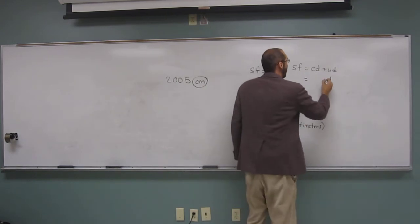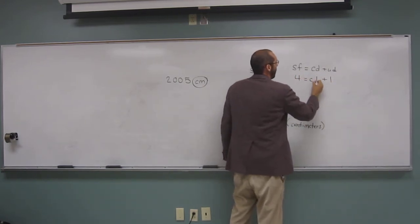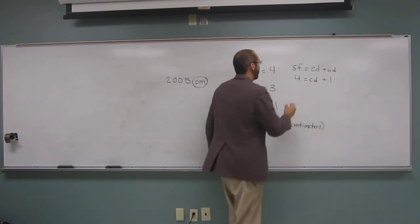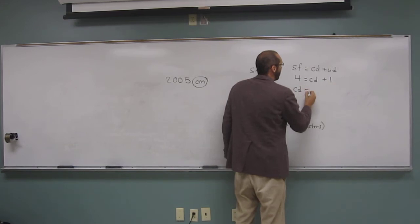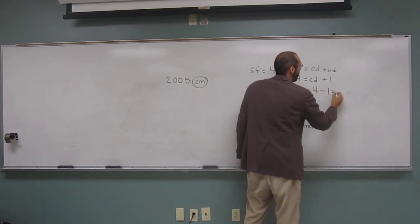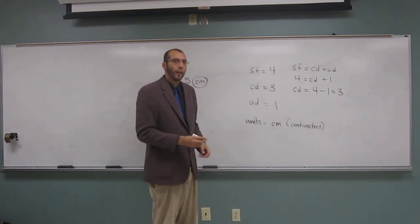One. And if we have four significant figures, right? So we could do something like this. Let's rearrange this equation. Certain digits must be four minus one, which equals three. Three. Can everybody rearrange that algebraically?